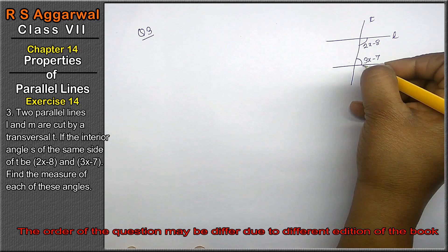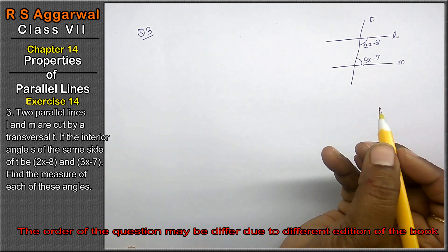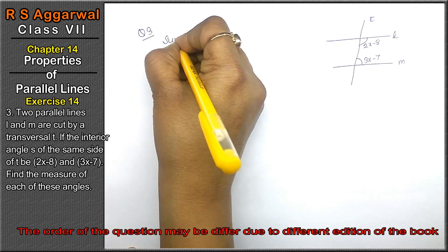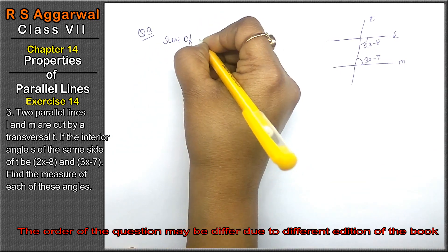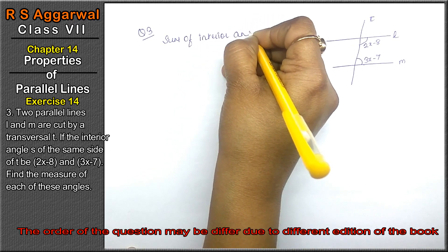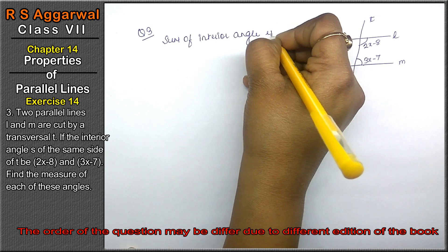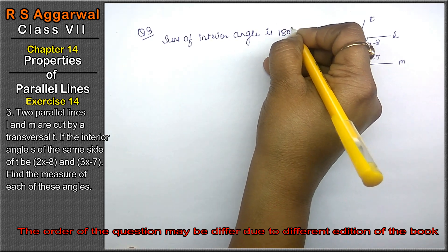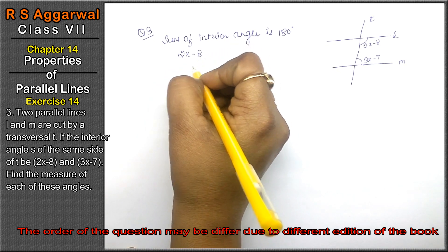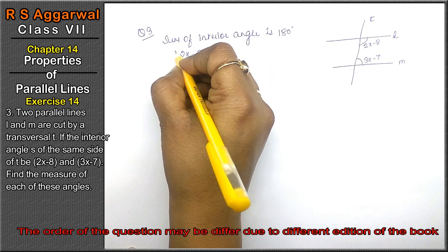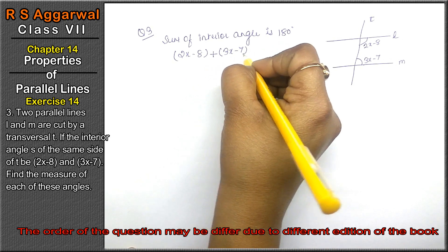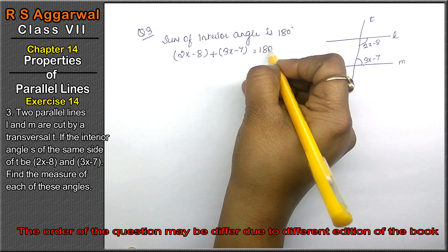We need to find both angles' values. We know that the sum of co-interior angles is 180 degrees. So let's start: (2x - 8) plus the second interior angle (3x - 7) equals 180 degrees.